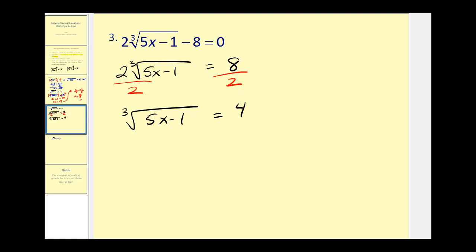Now our index is three, so we'll raise both sides of the equation to the power of three. The cube root of five x minus one cubed will just be five x minus one equals four to the third power would be 64. So we'll add one to both sides, that would become 65 divided by five. X equals 65 divided by five would be 13.